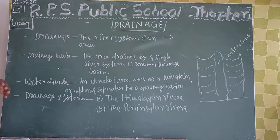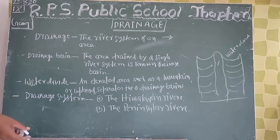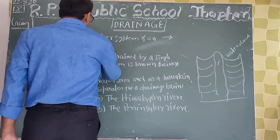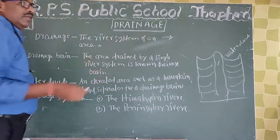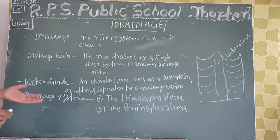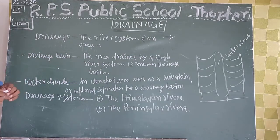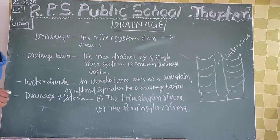The group of rivers can be referred to by the name of the river system. The river system of an area — in this area, there are so many trees and all of the trees can be referred to by the drainage area.